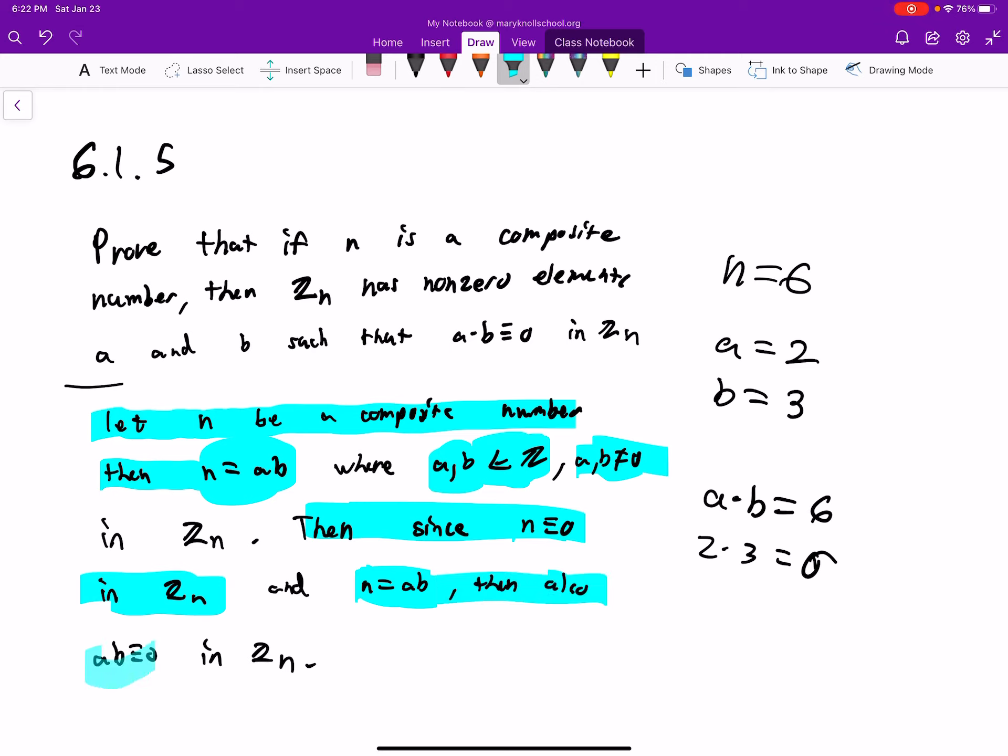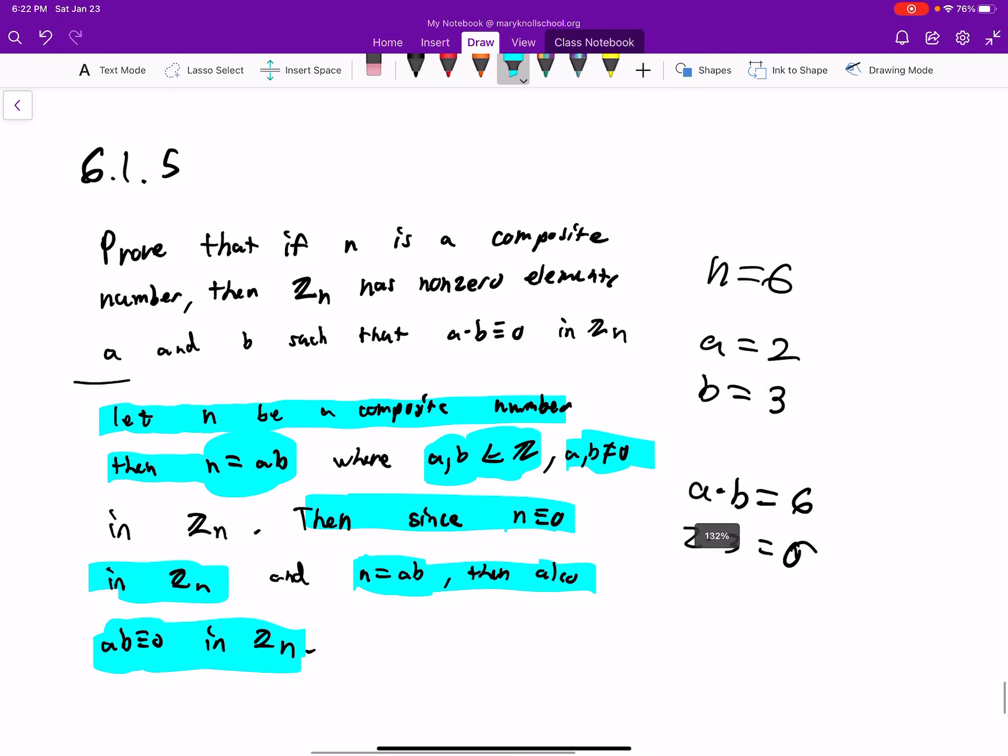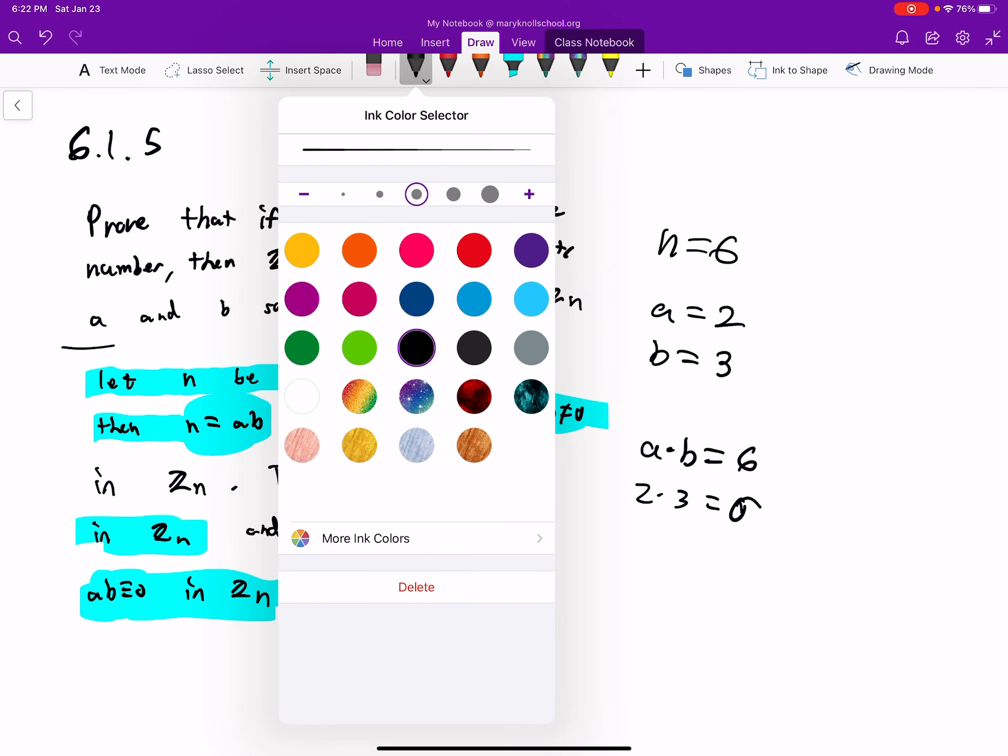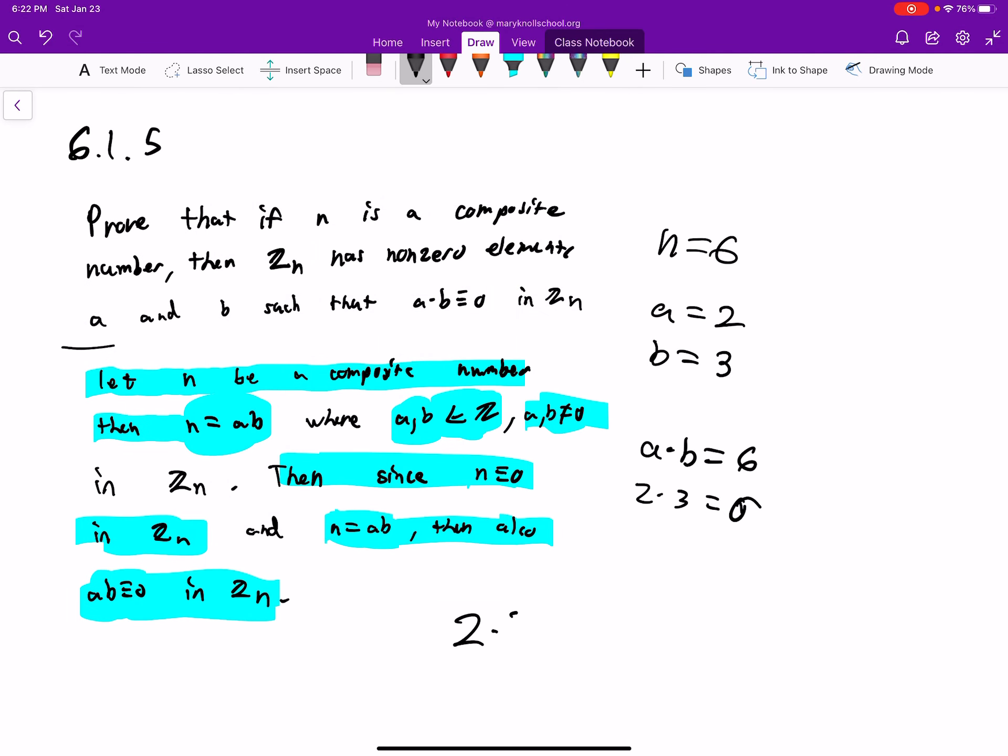Then also, a times b is equivalent to zero in Z_n. We could see that two times three is equivalent to zero in Z_6.